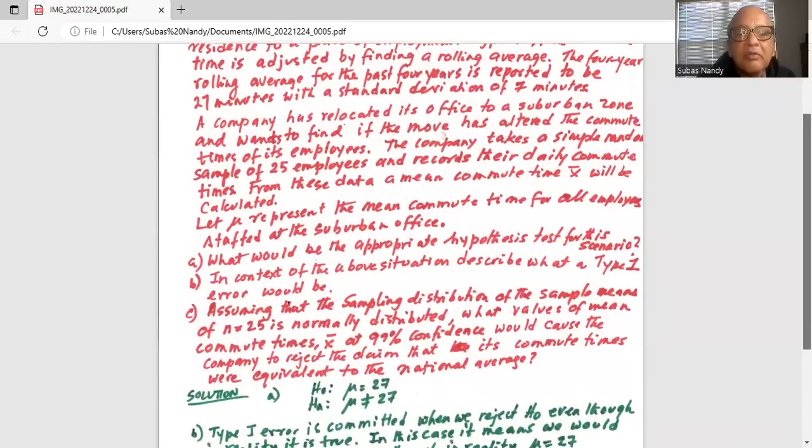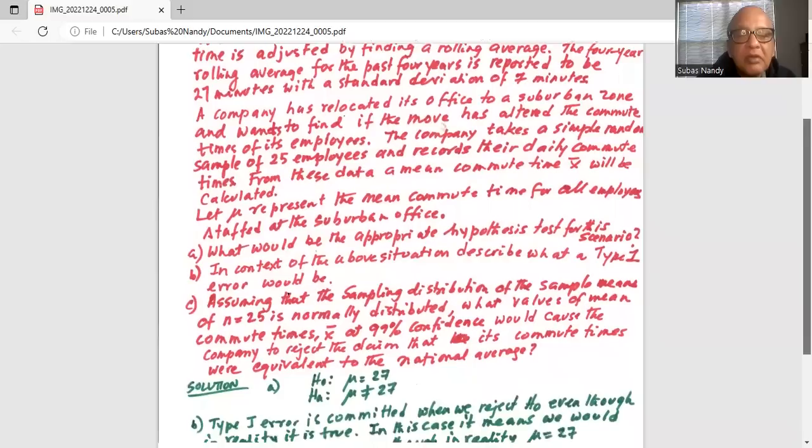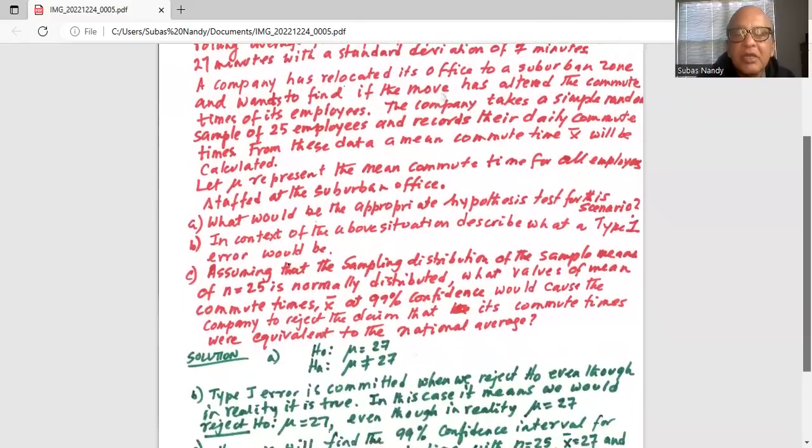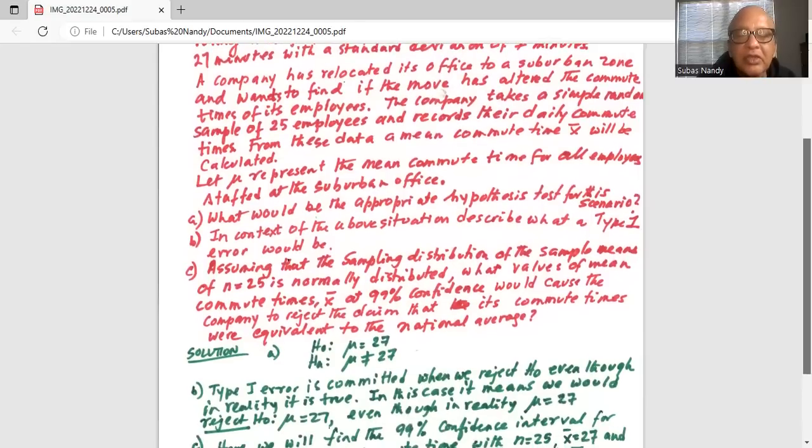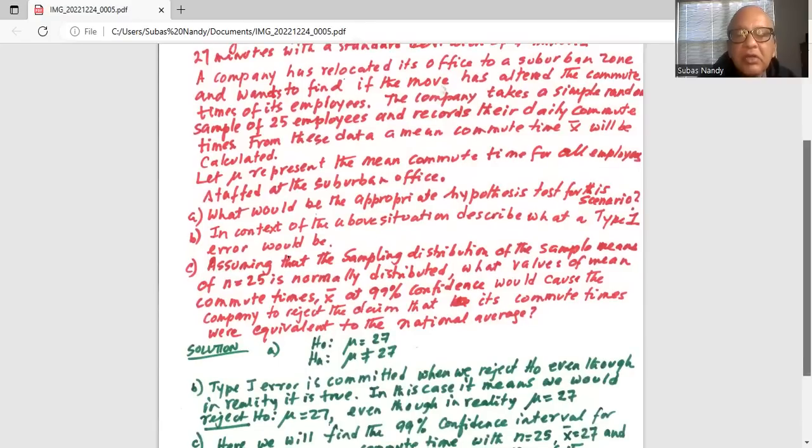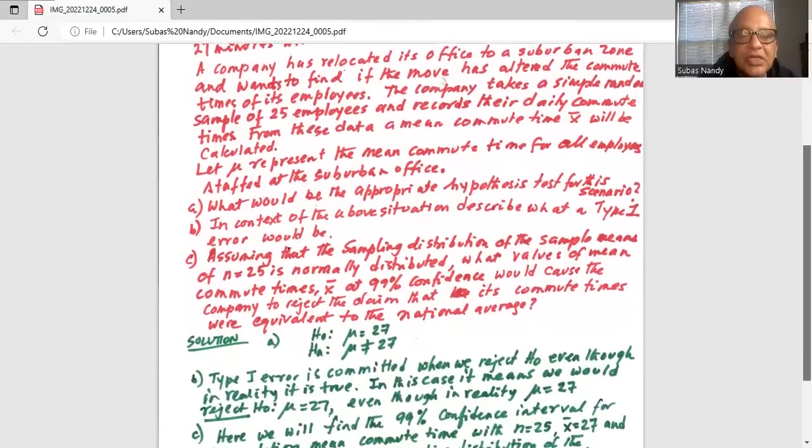Part b. What would be a type 1 error? What is type 1 error? Type 1 error is committed when we reject h0 even though h0 is true in reality. mu is equal to 27.